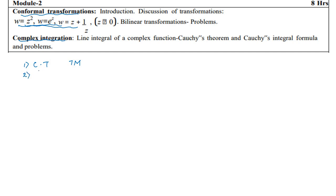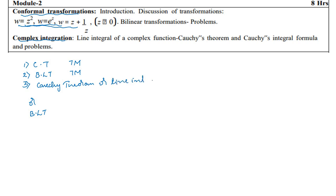Secondly, if you study BLT, there is a chance of it being asked in one question or as an option. Why not take that risk? If you study BLT, you can score 7 marks there as well. For question number 3, you can have the option of studying the Cauchy theorem or complex line integral — problems on line integral. If you study these two topics, you can definitely score 6 marks and even 20 out of 20.